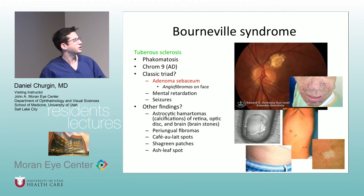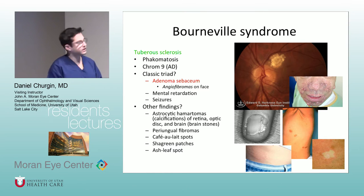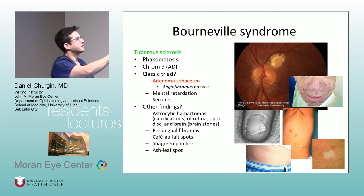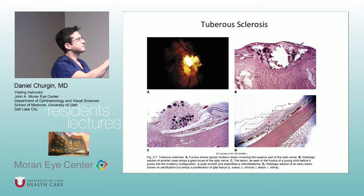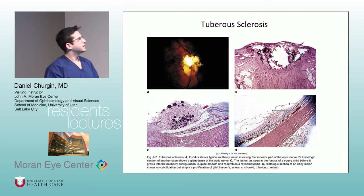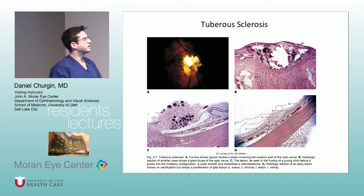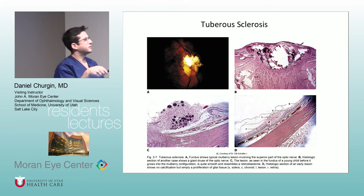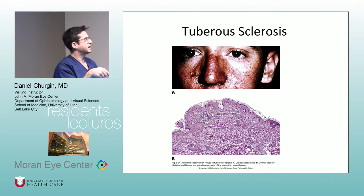They get astrocytic hamartomas of the retina, optic disc, and brain; periungual fibromas; café-au-lait spots; shagreen patches; and the ash leaf spot. At least on opto questions, they like to show you a picture of a face with those very characteristic changes. And there's some histology — I don't think I've ever seen histology of tuberous sclerosis on one of the tests, but that doesn't mean it can't show up. This is showing the astrocytic hamartoma, and this is the adenoma sebaceum of the face.